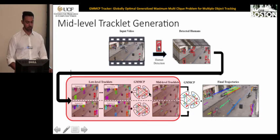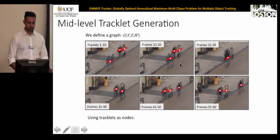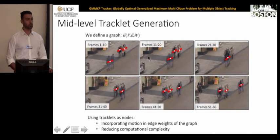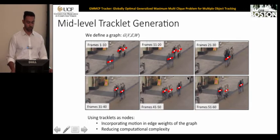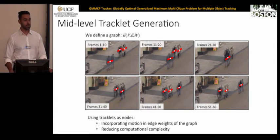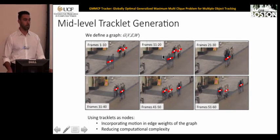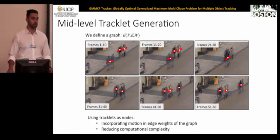For mid-level tracklet generation, shown here for six segments of a video, the low-level tracks in each segment form the nodes. We use low-level tracklets for two reasons: they reduce computational complexity by having fewer nodes, and they allow us to incorporate motion models into the edge cost. With only two detections we cannot model motion, but with low-level tracklets — requiring at least three detections — we can incorporate motion models within the edge cost.